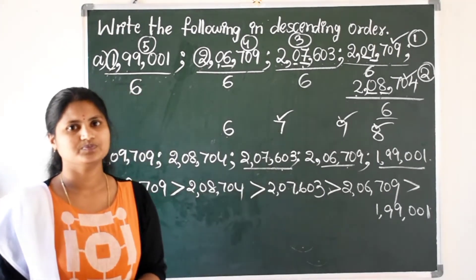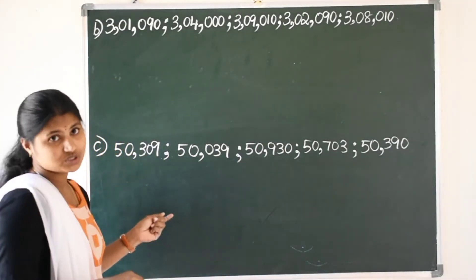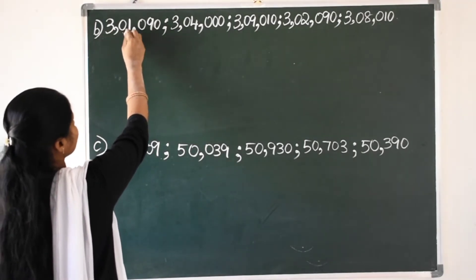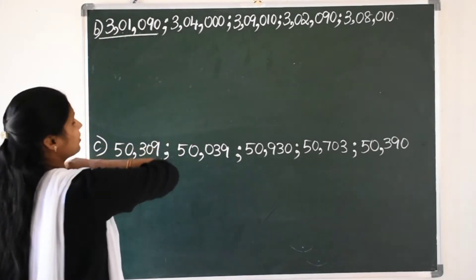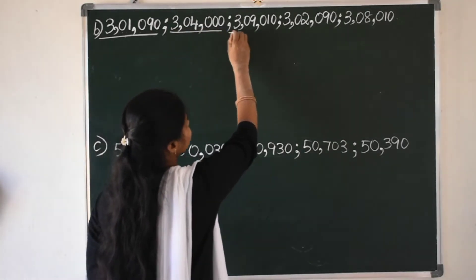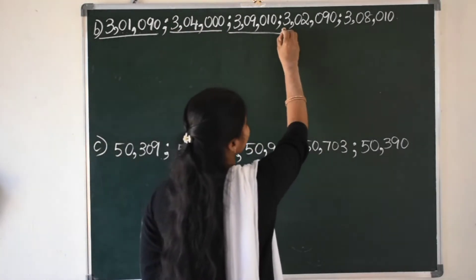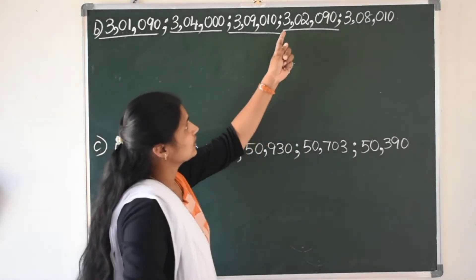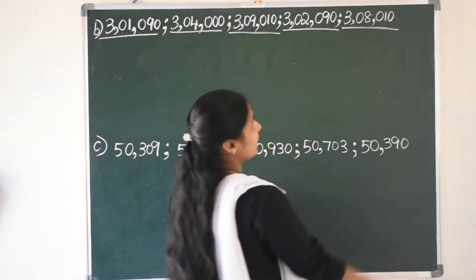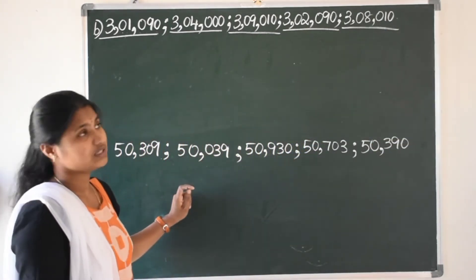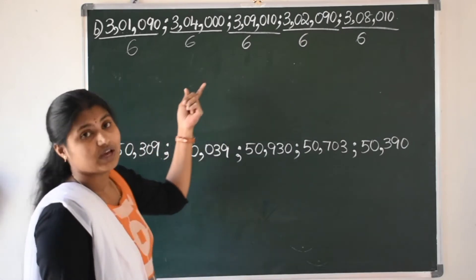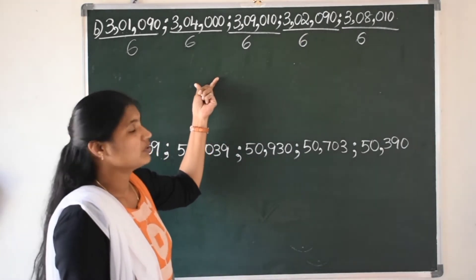Next we will take one more problem. See here, we have two more questions. Here: 3,09,10,90 — 1, 2, 3, 4, 5, 6 — a 6-digit number. Here also 3,09,004 — this is also a 6-digit number. 3,09,10 — this is also a 6-digit number. And 3,09,2090 — this is also a 6-digit number. And the last number 3,08,10,10 — that is also a 6-digit number. Here, all are 6-digit numbers only.